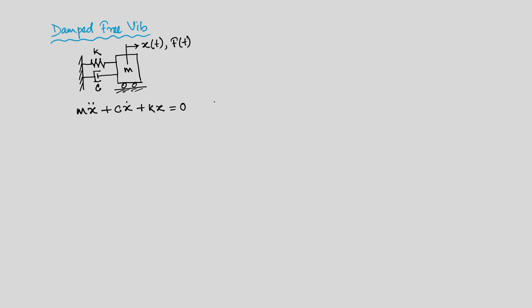There are initial conditions: x at 0 is x₀ and the velocity — the first derivative of x at 0 — is also defined. With this information, we have to solve this expression. The only difference in this case is the middle term that represents damping. We will assume a trial solution: x(t) = p·e^(λt).